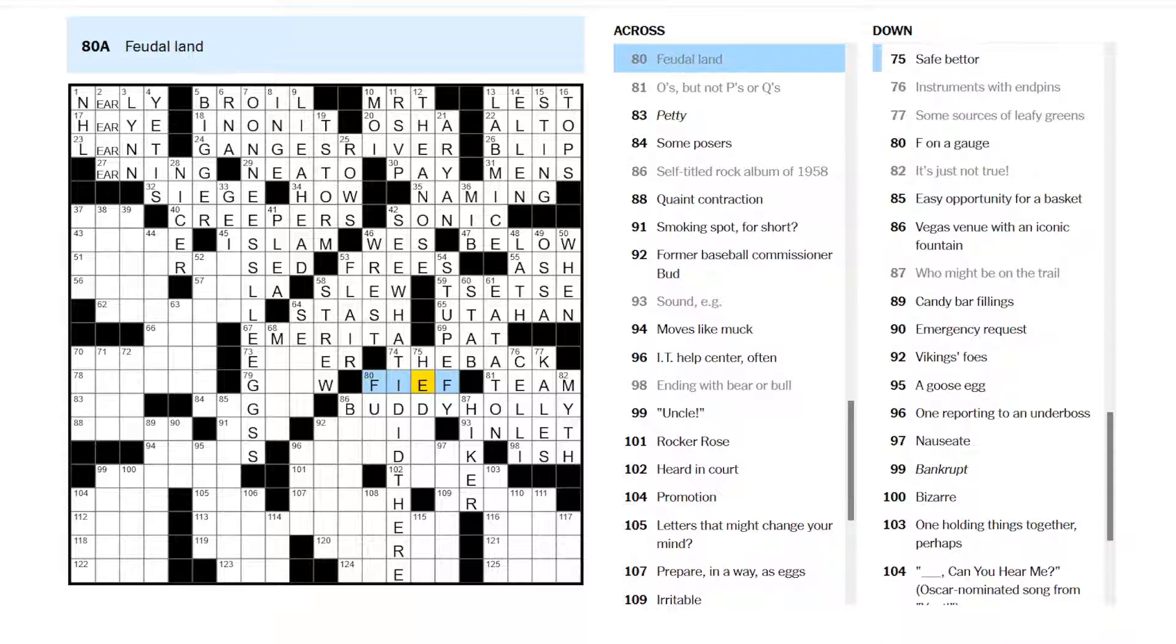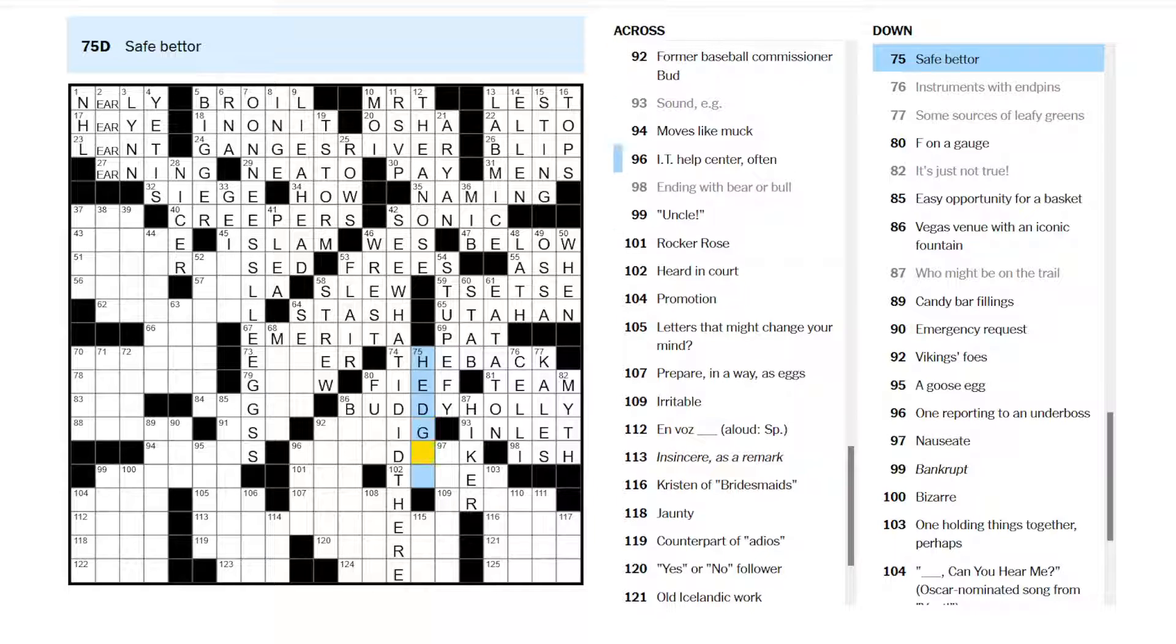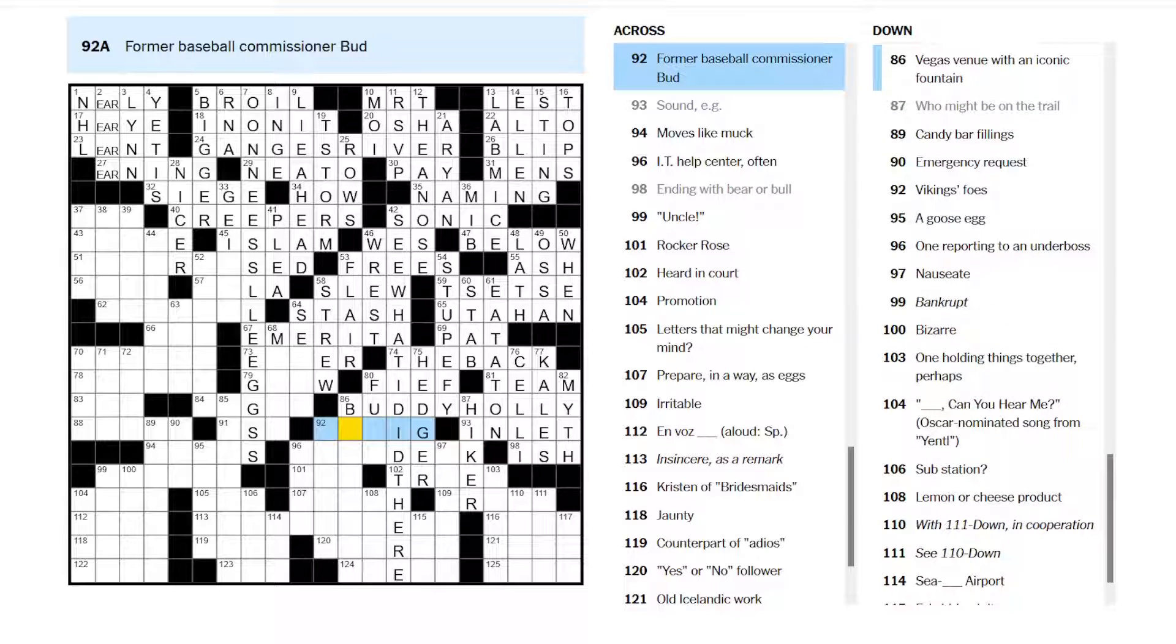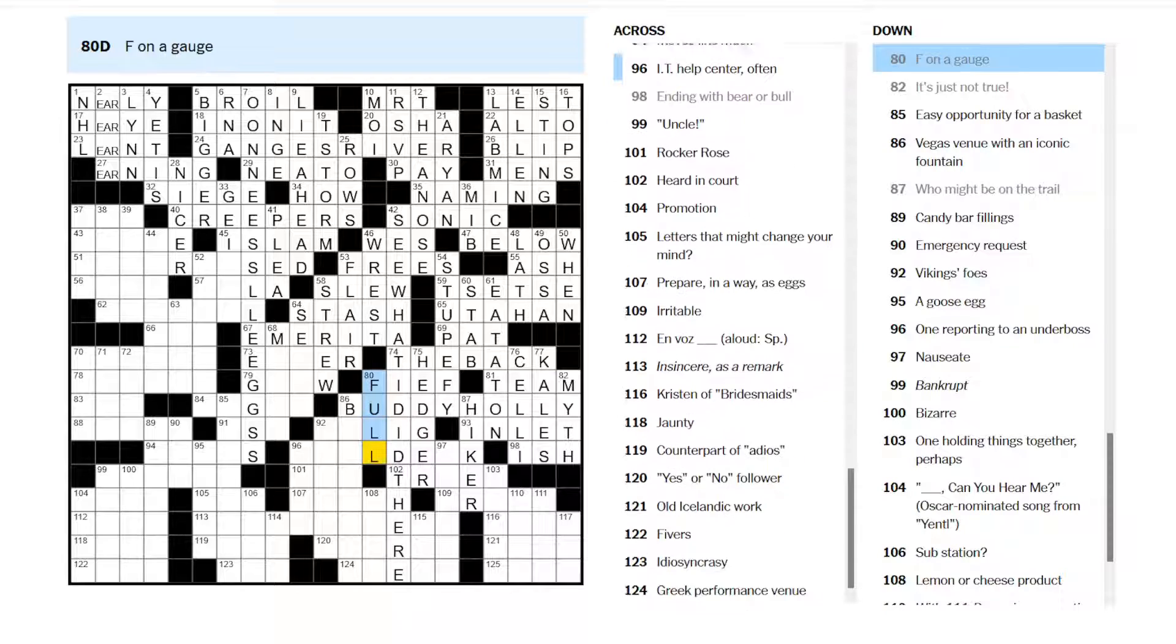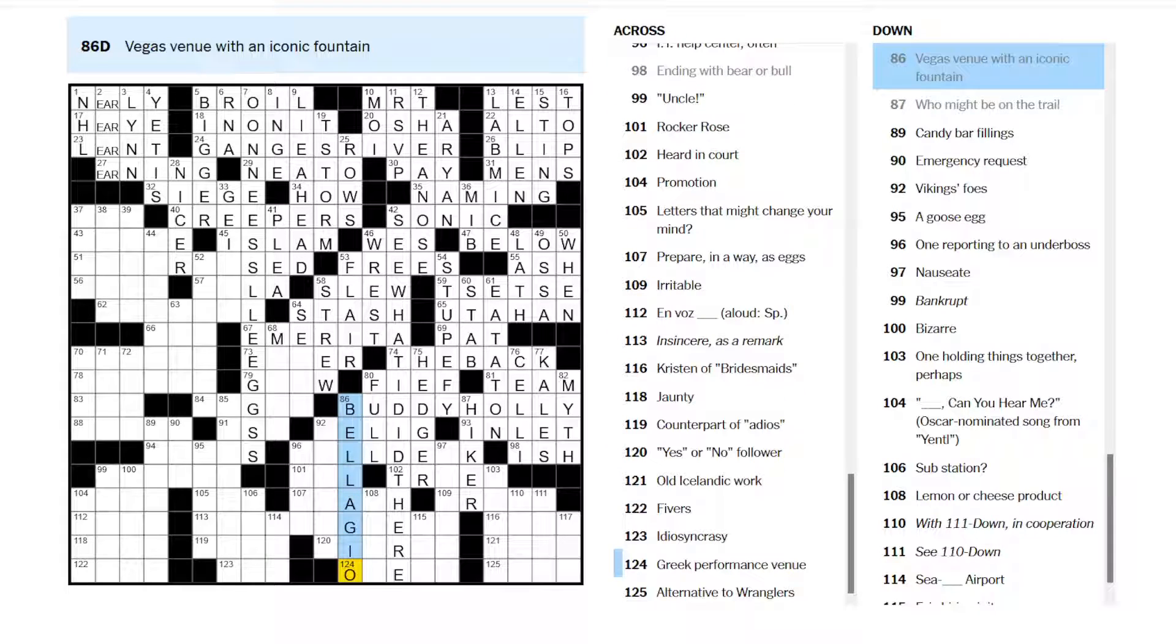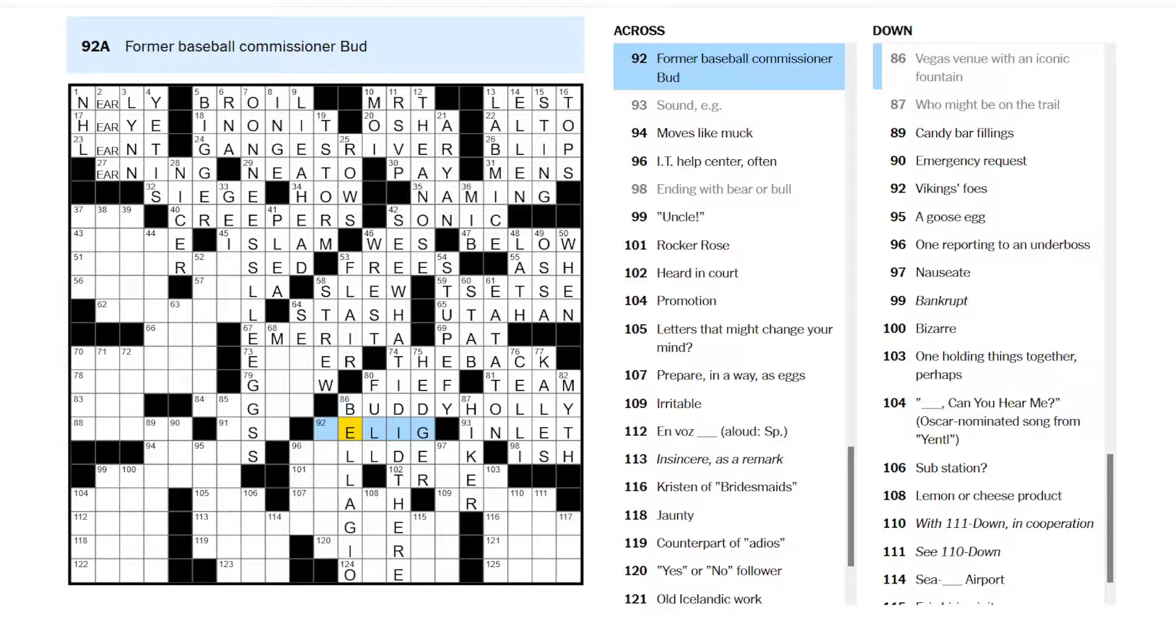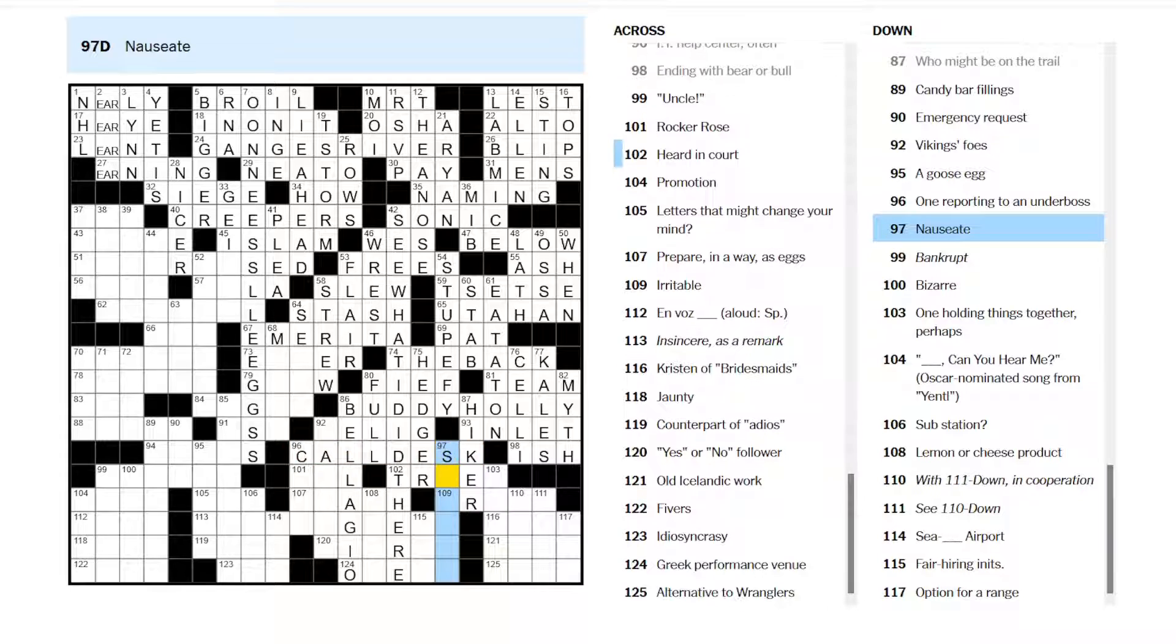Feudal land. Is a fief? Safe. Bethor. A hedger? Is one who hedges their bets? Former Baseball Commissioner Bud. Nope. F on a gauge. On a fuel gauge, F means full. Vegas venue with an iconic fountain. Oh, the Bellagio? Is that how you spell that? IT help center often is a call desk. To nauseate. To sicken. Maybe. Heard in court. Is tried.